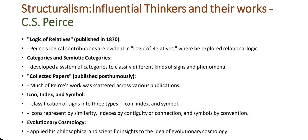One of Peirce's most enduring contributions is his classification of signs into three types: icon, index, and symbol. Icons are represented by similarity; indexes by contiguity or connection; and symbols by convention. This triadic model became foundational in semiotic analysis. Peirce also applied his philosophical and scientific insight to the idea of evolutionary cosmology, reflecting on how signs and meaning evolved over time.